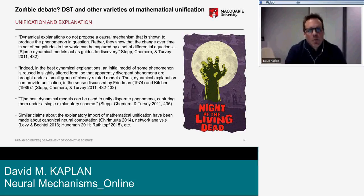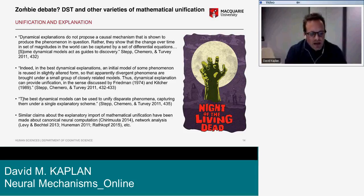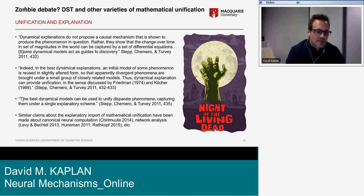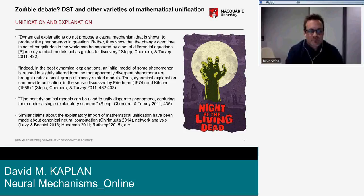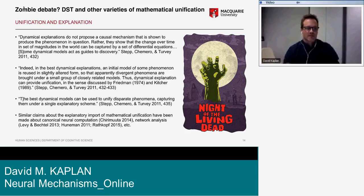There are a lot of attempts to fuse explanation with unification in the context of Bayesian modeling. This seems like a recurrent debate in the philosophy of cognitive science, and there's a lot of overlap with similar arguments previously made in the context of dynamical explanation. Similar claims about the explanatory import of mathematical unification have been made about canonical neural computational models, network analysis models, and others.